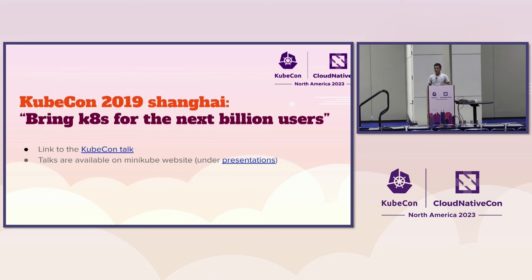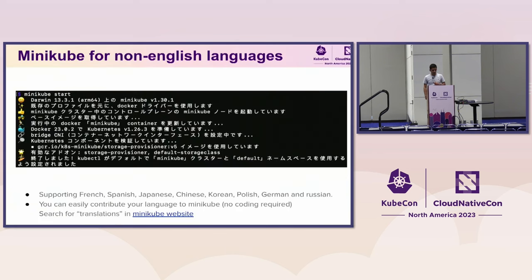One inspiring talk in 2019 was a KubeCon talk called 'Bringing Kubernetes to the Next Billion Users.' Thomas talked about the next billion humans who will have internet — they don't speak English and don't have fast internet connections. That inspired us to add multiple languages to Minikube: French, Spanish, Polish, German, Chinese. We also made Minikube work with slow internet connections. If you speak a language Minikube doesn't support, you can contribute it without any coding knowledge, just through our website.